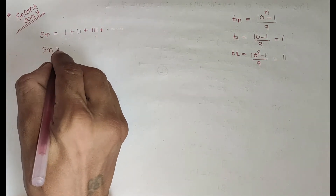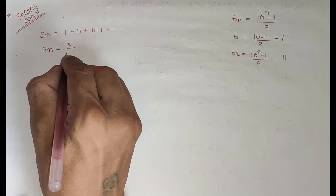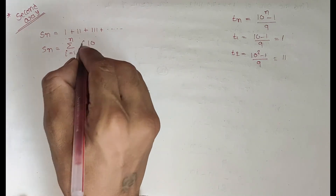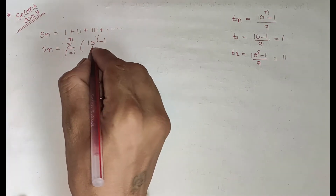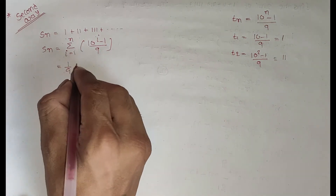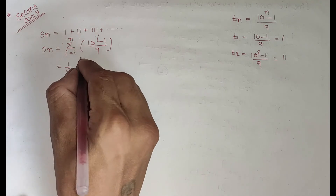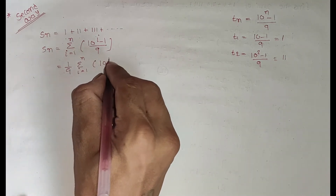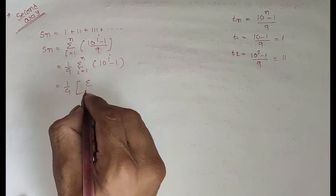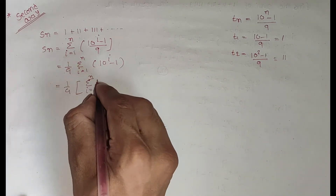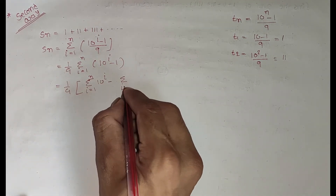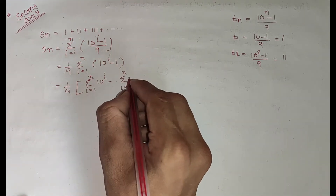So Sn equals sigma from i equals 1 to n of (10^i minus 1) divided by 9. Taking out the factor of 1 over 9, this becomes (1/9) times sigma from i equals 1 to n of 10^i, minus sigma from i equals 1 to n of 1.